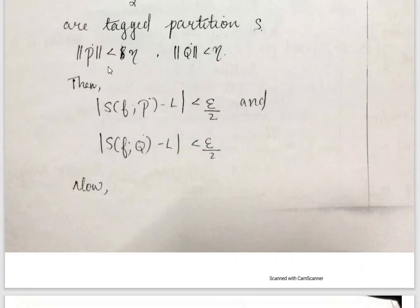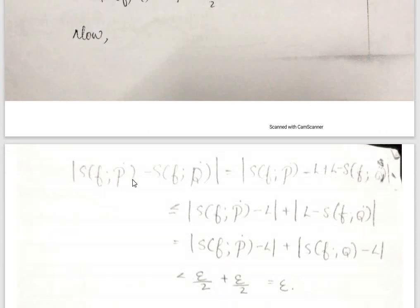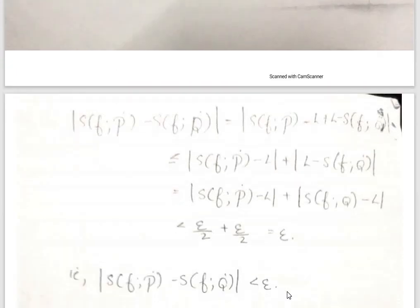If f is Riemann Integrable and norm of Q-dot less than eta, then |S(Q-dot) − L| < epsilon by 2. Now we find that |S(P-dot) − S(Q-dot)| equals |S(P-dot) − L + L − S(Q-dot)|, and by the triangle inequality this is less than epsilon by 2 plus epsilon by 2, which is less than epsilon.